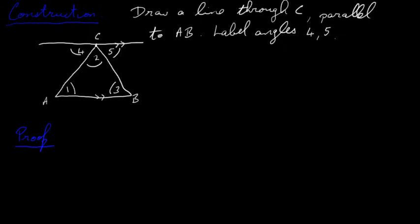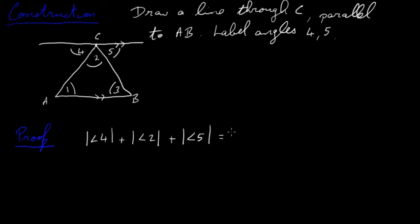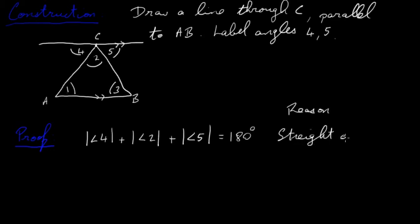Now for the proof. First, we say that angle 4 plus angle 2 plus angle 5 equals 180 degrees. The reason for this is that they form a straight angle — the constructed line is a straight line, so these three angles along it add up to 180 degrees.